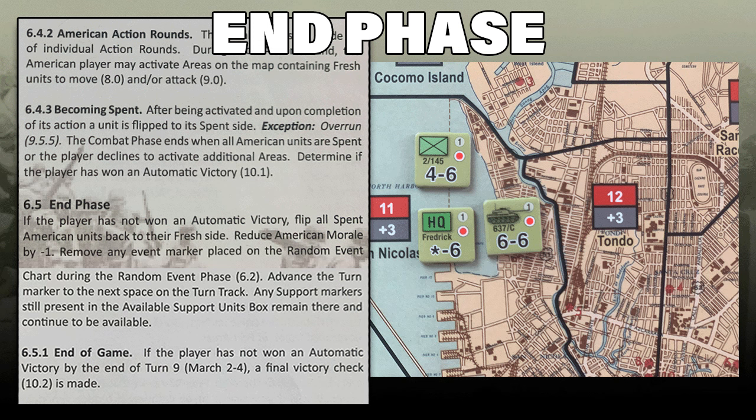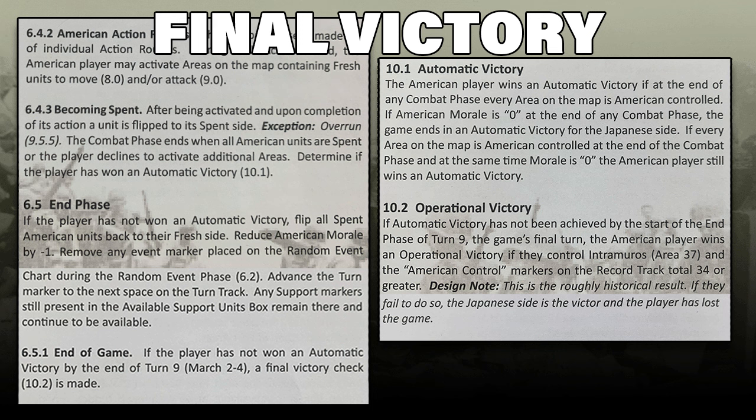Ending the game: if the player has not won an automatic victory by the end of turn 9, a final victory check is made. The American player wins an automatic victory if at the end of any combat phase every area on the map is American controlled. If American morale is 0 at the end of any combat phase, the game ends with an automatic victory for the Japanese. If every area is American controlled and morale is 0 simultaneously, the American player still wins the automatic victory.